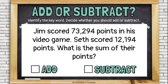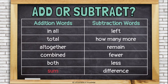Jim scored 73,294 points in his video game. Seth scored 12,194 points. What is the sum of their points? 'Sum' pretty much always means to add — that's what you call the answer to an addition problem, a sum.